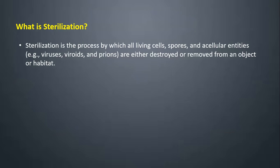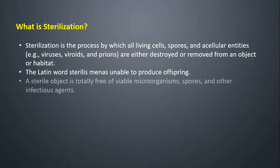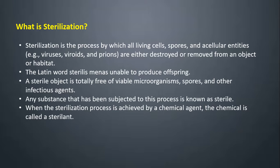The first term is sterilization. Sterilization is the process by which all living cells, spores, and acellular entities — e.g. viruses, viroids, and prions — are either destroyed or removed from an object or habitat. The Latin word sterilis means unable to produce offspring. A sterile object is totally free of viable microorganisms, spores, and other infectious agents. Any substance subjected to this process is known as sterile. When sterilization is achieved by a chemical agent, the chemical is called a sterilant.